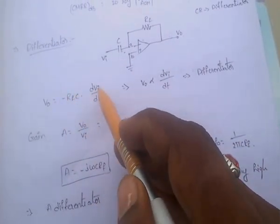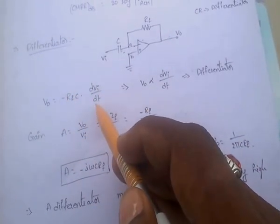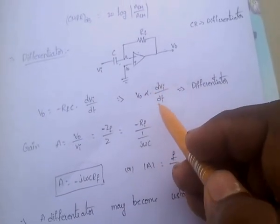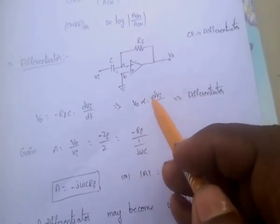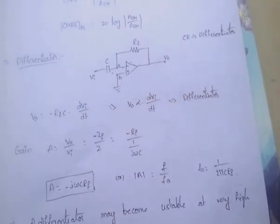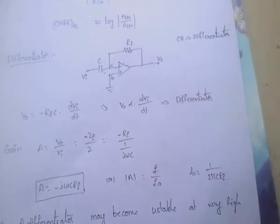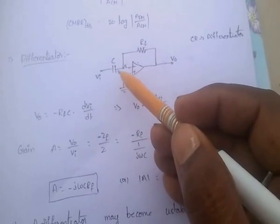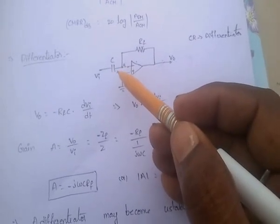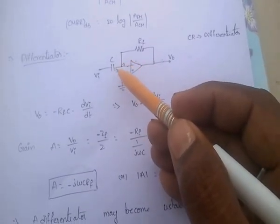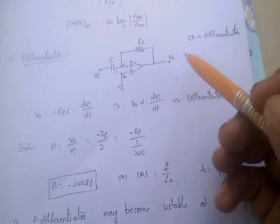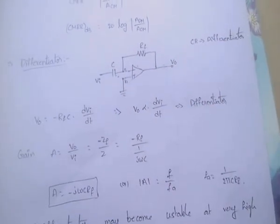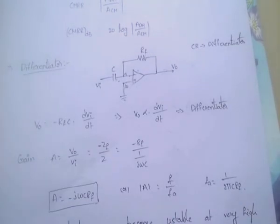V0 is proportional to dVi/dt, which means it is a differentiator. For remembrance: in any CR circuit, C comes first on the input side — that means differentiator. In case of integrator, R comes first and C comes on the other side.